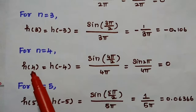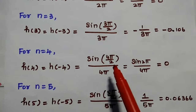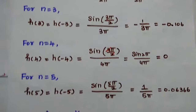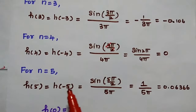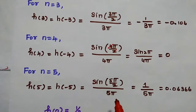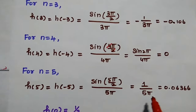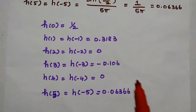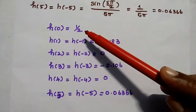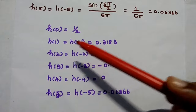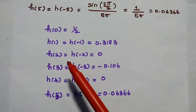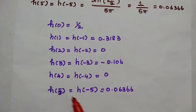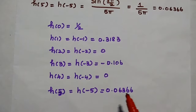For n = 4: h(4) = h(-4) = sin(4π/2) / 4π = sin(2π) / 4π = 0. For n = 5: h(5) = h(-5) = sin(5π/2) / 5π = 1 / 5π = 0.06366. So all 11 impulse sequence values are: h(0)=0.5, h(±1)=0.3183, h(±2)=0, h(±3)=-0.106, h(±4)=0, h(±5)=0.06366.